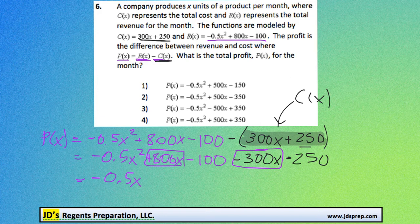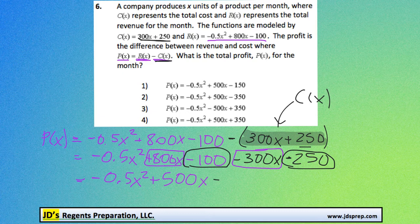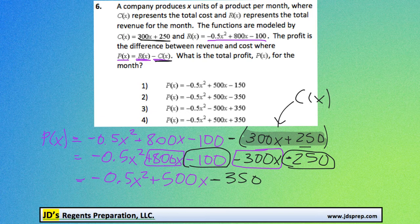So our x squared term will be the same. 800 minus 300 is 500, so that will be plus 500x. And then we can also combine our minus 100 and our minus 250, that would be combined to become minus 350.